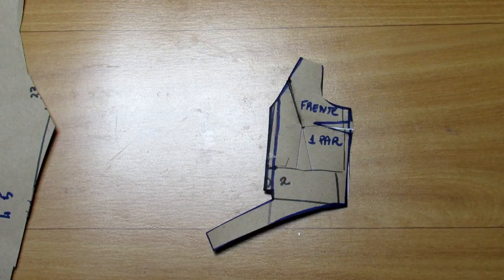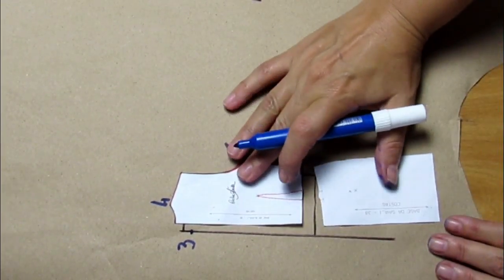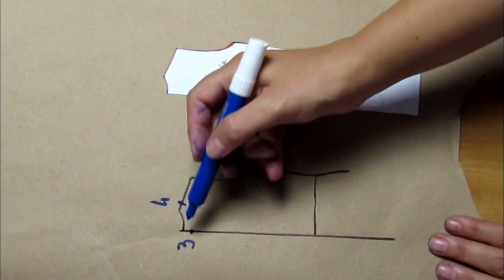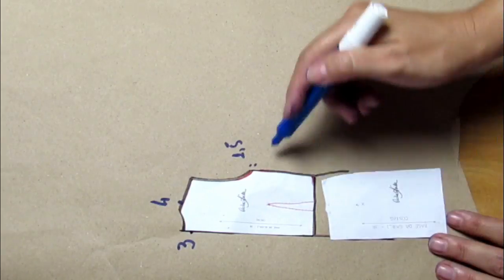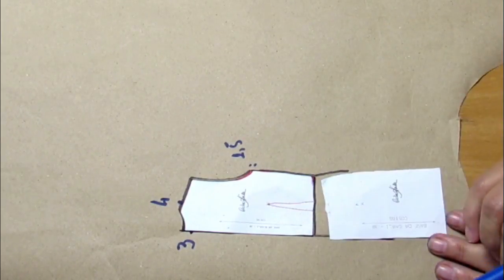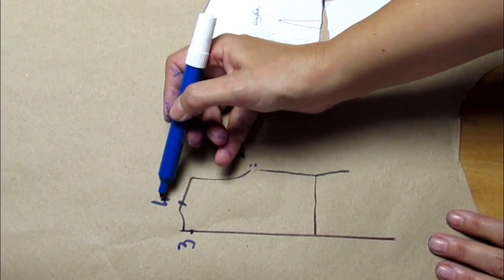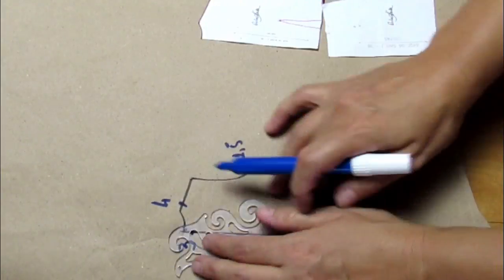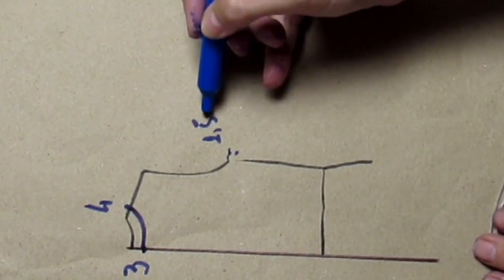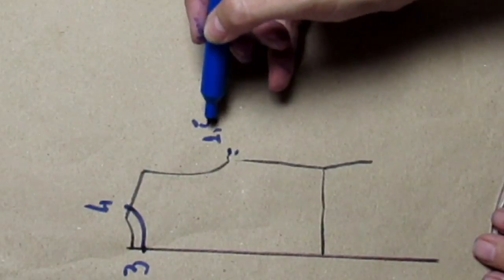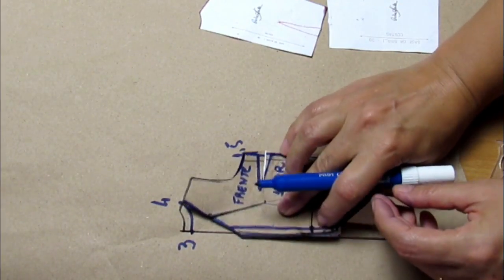For the back, I took the bodice base and skirt base, traced this straight line, copied their outline. I didn't copy the dart because we won't close the dart. At the center back I went down 3cm, at the shoulder I came in 4cm, same as the front. I redrew the neckline with the French curve. At the armhole side I came out 1.5cm and went down 1.5cm, same measurements as the front.